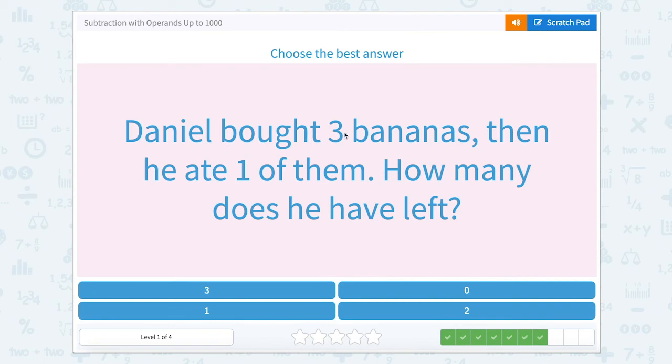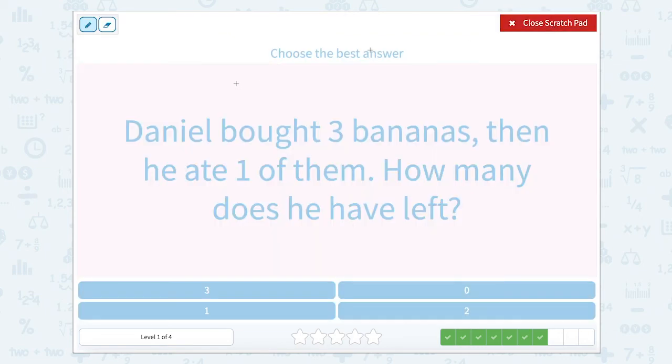Daniel bought three bananas. Then he ate one of them. How many does he have left? Daniel started with three bananas. He was hungry. So he ate one. And now he is left with two bananas.